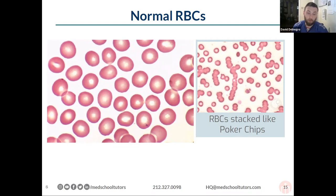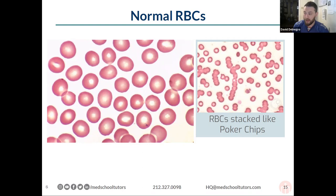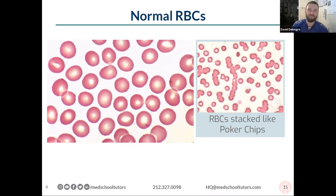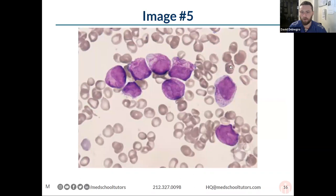Bonus question: what is classically a microcytic hypochromic red blood cell pathognomonic for? Iron deficiency anemia. The hypochromia is fairly pathognomonic, particularly on the boards, with an MCV less than 80 classically, especially if it is a chronic iron deficiency. In the very beginning it might be in the higher 80s. They try and make it straightforward.